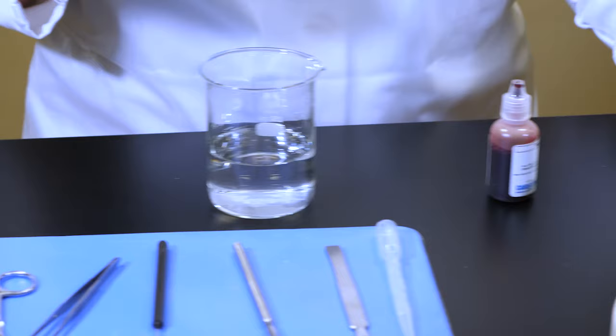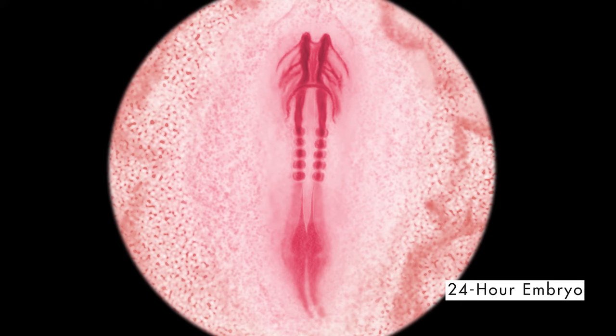Now, we'll place the petri dish containing the blastoderm onto the stage of the stereomicroscope. Under the microscope, the blastoderm looks like this. The blastoderm looks like a short tube surrounded by a flat disc. The tube is the embryo, and the disc surrounding the embryo is the area pellucida. The area pellucida forms the circulatory system of the chick.